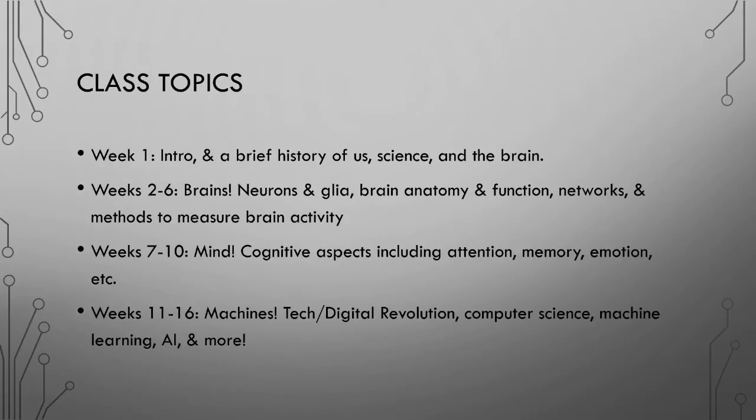In terms of course outline, the first third of the class will be about brains — what they are, what they're made of, and generally what different parts of the brain are responsible for. The second third will be about the mind, covering big topics like attention, memory, emotion, language, and things like that. The final third will be about artificial intelligence and how it's playing a role in our world today.